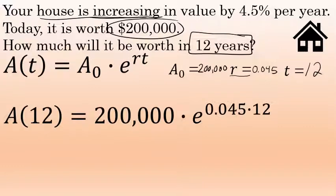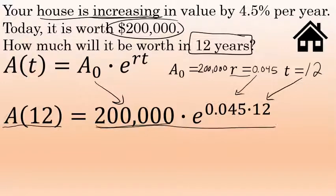Substituting those values into the formula tells me that the amount the house will be worth after 12 years is $200,000, the initial amount, times e to the power of rate times time, 0.045 times 12. This basically becomes a calculator exercise. You can type this into your calculator all at once. The calculator will do the order of operations and raise e to the power of 0.045 times 12 first, and then multiply that amount, multiply that value by the amount the house is worth today, $200,000.